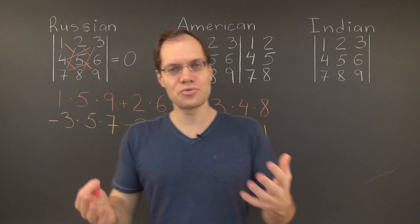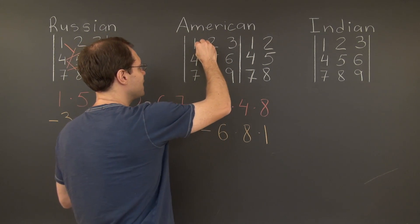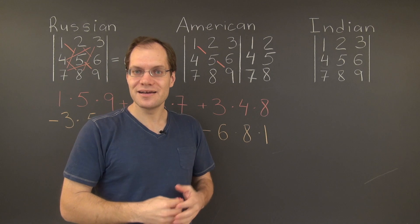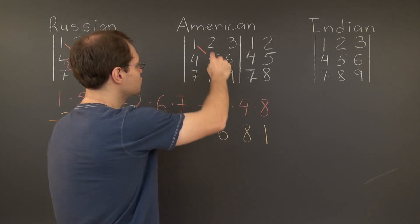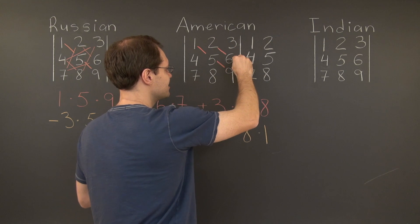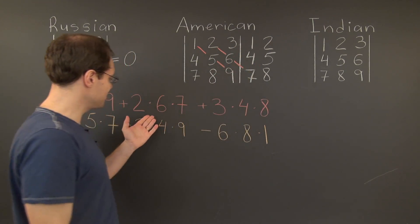Let's start with the three positive patterns. One will be 159 as before, but the second one now becomes a straight line starting from two and going down and to the right. 267. Here it is right here.